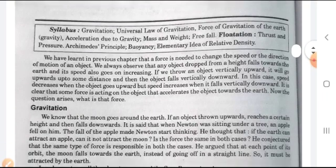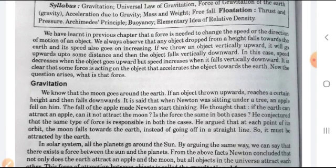Then it comes back to the center of the earth. In this case, speed decreases when the object goes upward, but its speed increases when it falls vertically downward. It is clear that some force is acting on the object that accelerates the objects towards the earth. Now the question arises: what is that force?